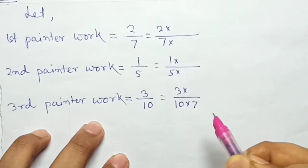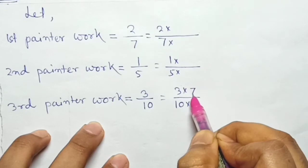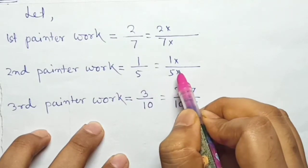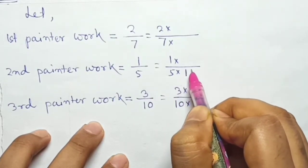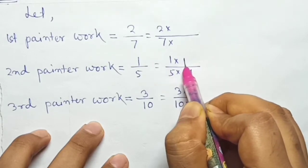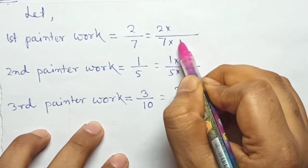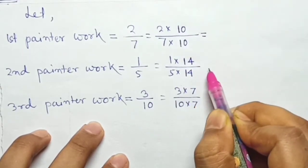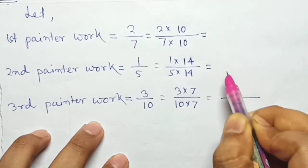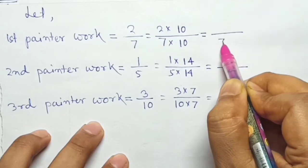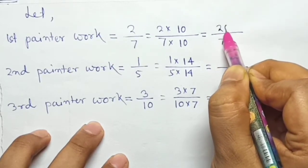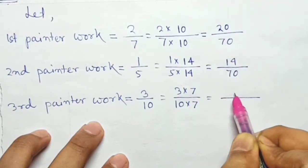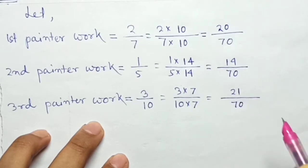For 2/7: multiply by 10 to get 20/70. For 1/5: 5 goes into 70 fourteen times, so 1×14 = 14/70. For 3/10: multiply by 7, so 3×7 = 21/70.